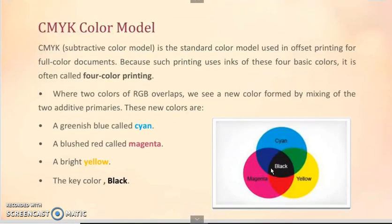Now we move forward to CMYK color model. In this model, cyan, magenta, yellow and black colors are used as primary colors. This model is used for describing color output to hard copy devices. Unlike video monitors which produce a color pattern by combining light from the screen, hard copy devices such as plotters produce a color picture by coating paper with color pigments. CMYK color model is a standard color model used in offset printing for full color documents. Because such printing uses inks for these basic colors, it is often called four color printing.